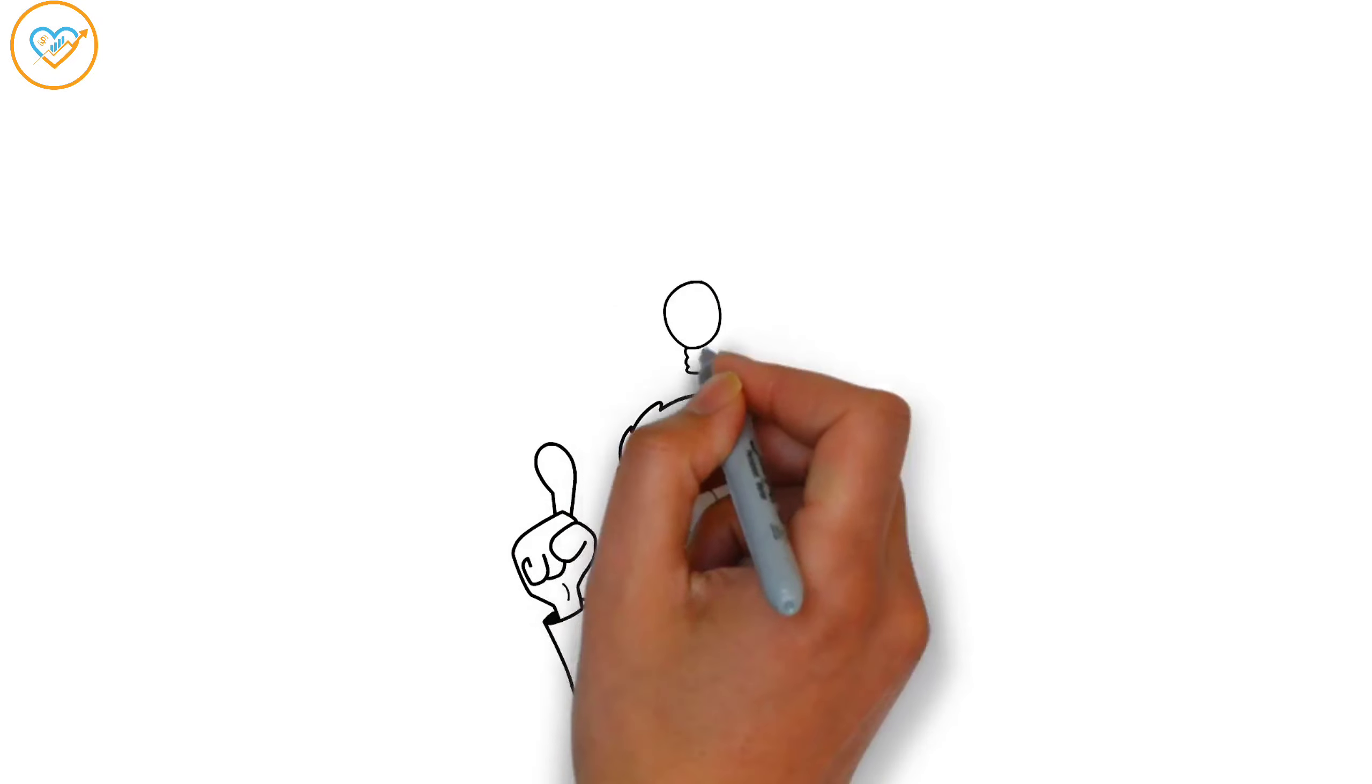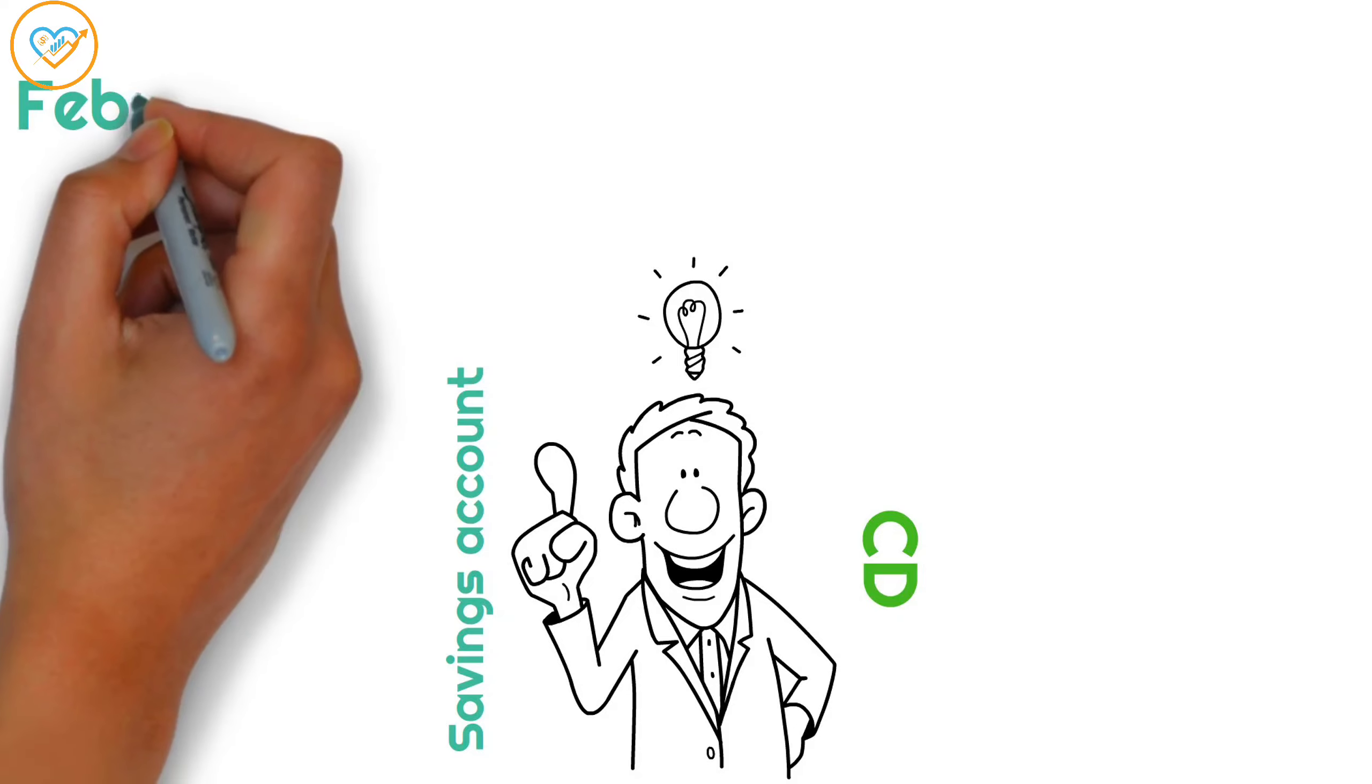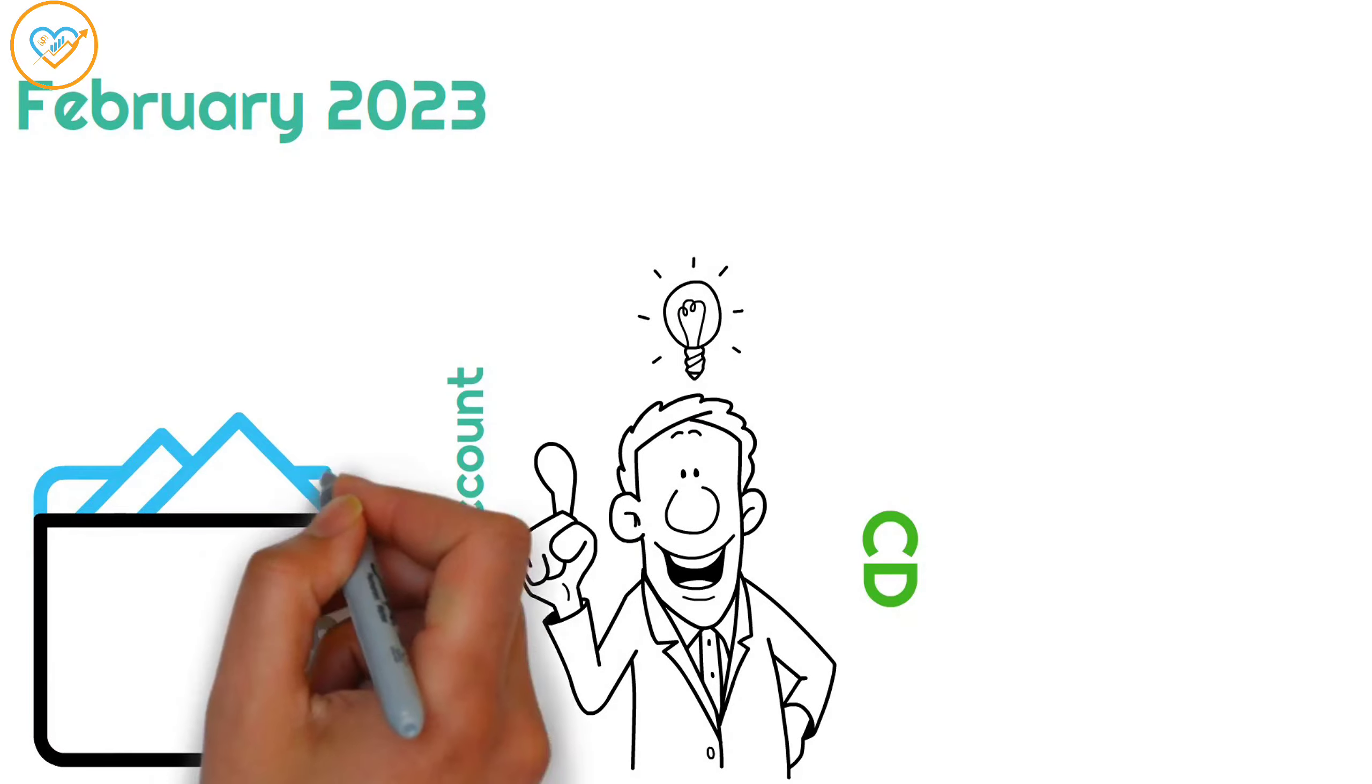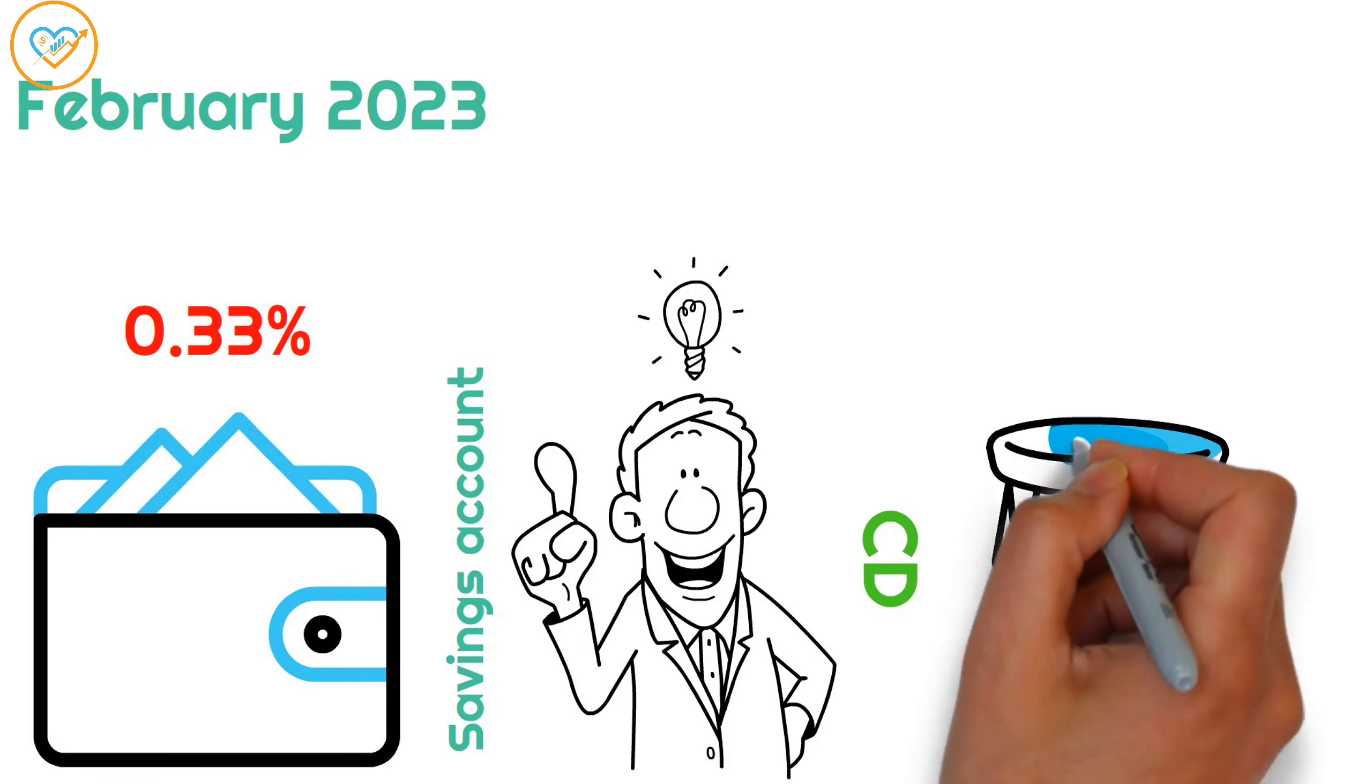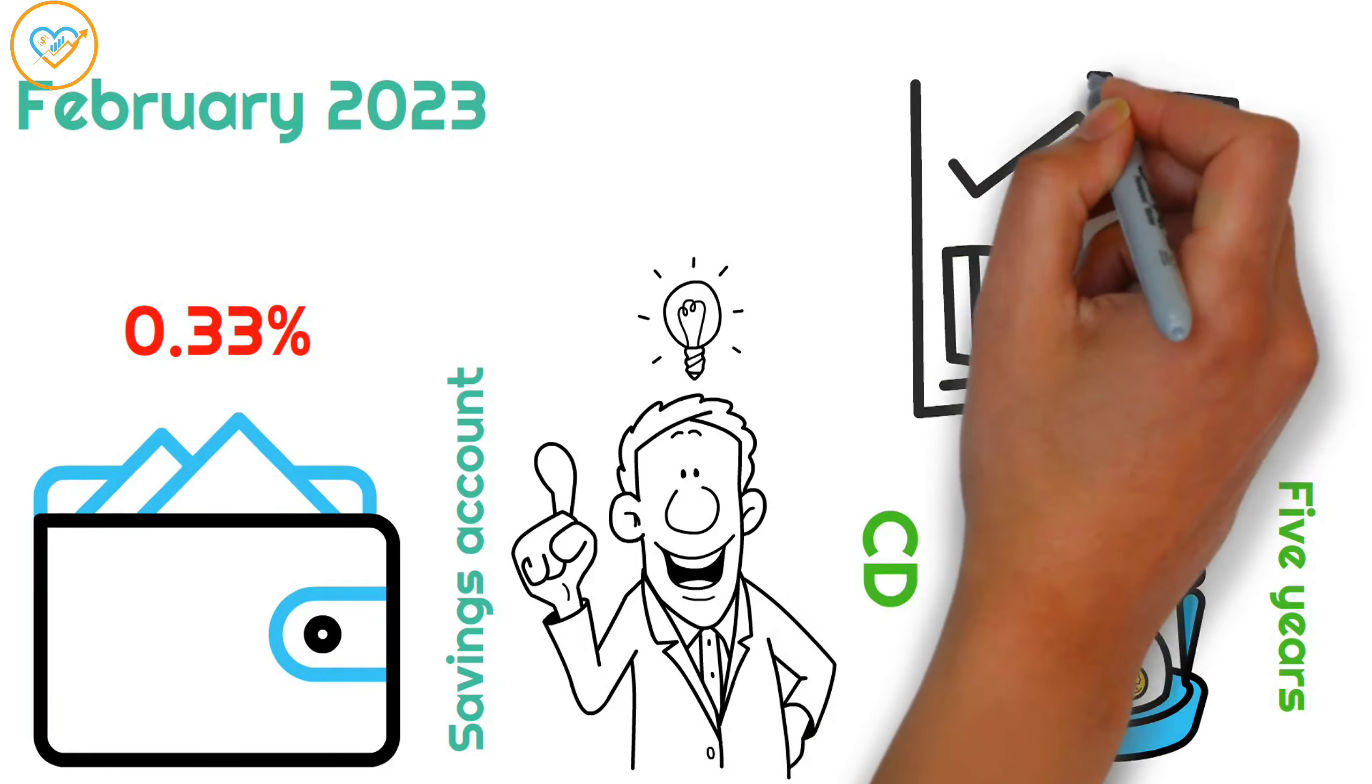Let's get into the idea of keeping your money in a savings account or CD to get a guaranteed return. As of February 2023, the average return on savings accounts is a paltry 0.33%. That means if you invested your $1,000 for 5 years, you would only see it grow to $1,106.